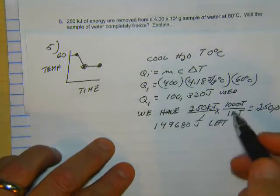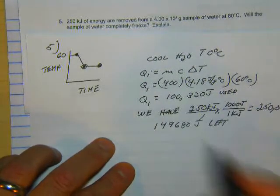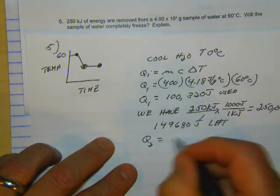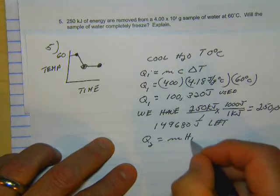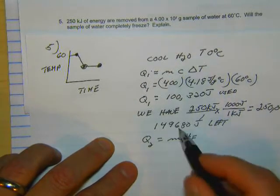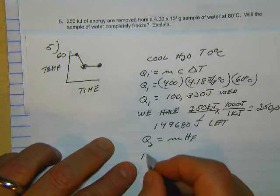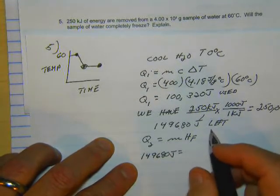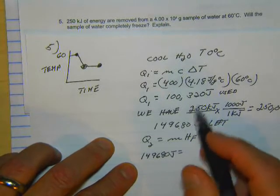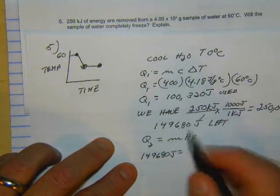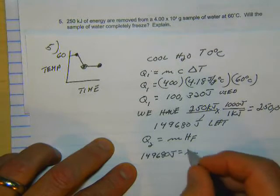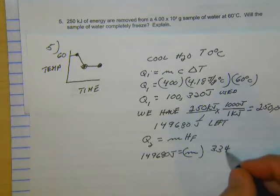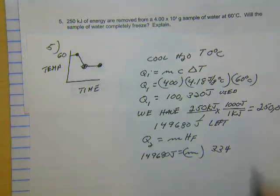Well, we want to see if we got enough energy to freeze 400 grams of water. So we'll call this Q2, and it's M, and the heat of fusion. So we've got this much energy, 149,680 joules. We've got, we want to know if we can freeze 400, so we're not going to put anything in for mass. And we know the heat of fusion is 334 joules per gram.